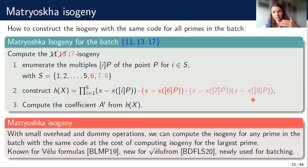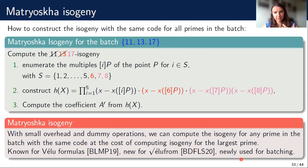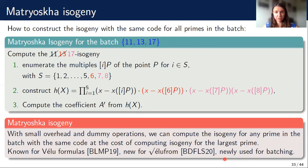This Matryoshka property of isogenies — that you can just keep adding things to compute isogenies with larger degree — was already known. What is new is that we noticed this property also holds for the new square-root Vélu formulas. The reason we're getting these speedups is that this actually works well with batching: you don't want to pay the cost of a large prime isogeny for a small one, but if the primes in a batch have similar size, then paying the cost for a slightly larger prime is not such a big overhead.